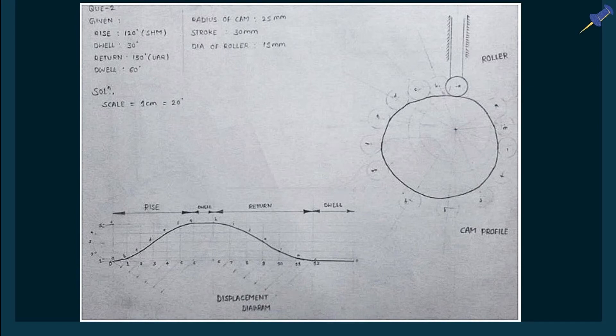For the return stroke, since the motion is uniform acceleration and retardation, solve using the equation v = u + at to mark the return stroke points. Join these points by a smooth curve, naming them H, I, J, K, L, and so on. This gives the displacement diagram for the return stroke, completing the full displacement diagram.